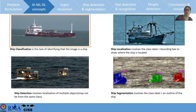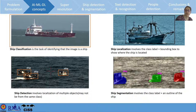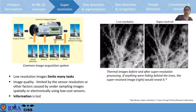It is important to define some terms used later in the presentation. Ship classification identifies that a vessel is present in an image. Vessel localization involves the class label and bounding box coordinates showing where the ship is located. Vessel detection involves localization of multiple vessels, possibly from different classes. Ship segmentation involves the class label and the outline of the ship — finding the pixels that are part of the ship.